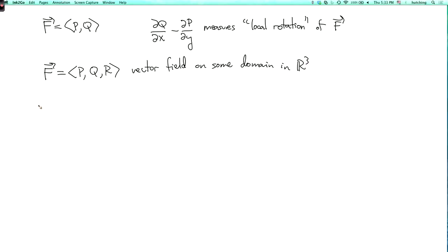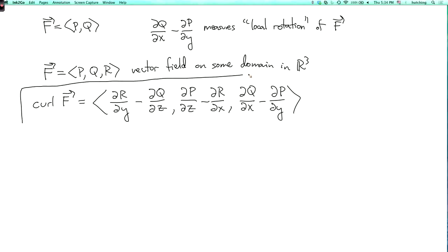Then we define a new vector field which is called the curl of f. So curl f, I'm going to write the formula which is going to look crazy, and then I'll show you a shortcut for remembering it. So it's dr dy minus dq dz comma dp dz minus dr dx comma dq dx minus dp dy. That's a crazy looking expression. I can't remember it like that, but anyway that's what it is very explicitly.